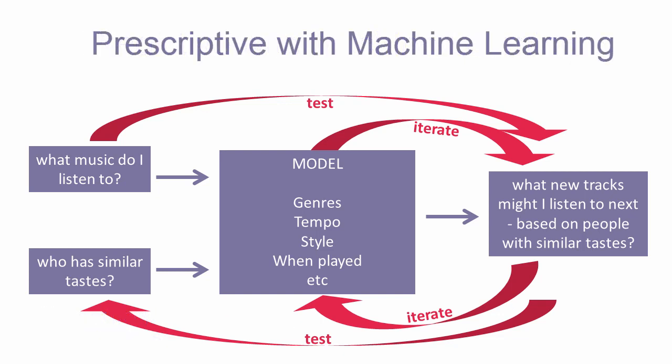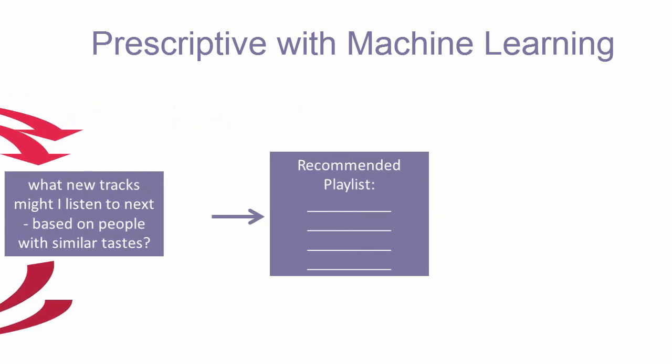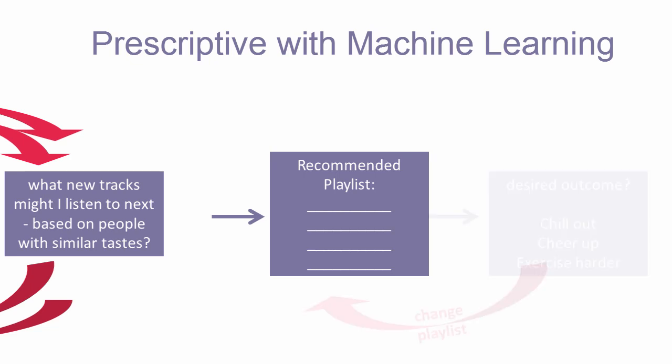Prescriptive analytics is also forward thinking and builds upon predictive capabilities. The difference is that with prescriptive analytics, we use machines to start making recommendations. By providing some criteria for what is a good or bad outcome, prescriptive algorithms can determine how to achieve the best outcome. In some cases, we can even enable the machine to execute on the recommendations.